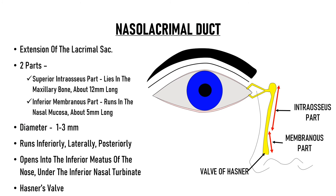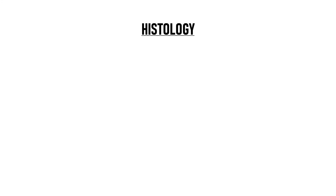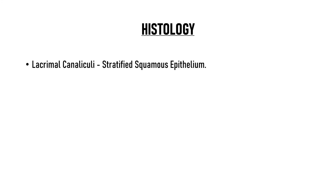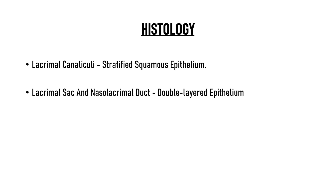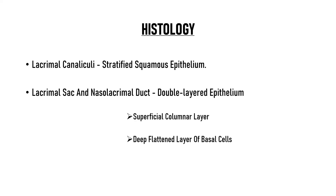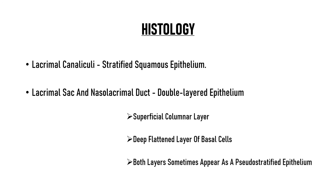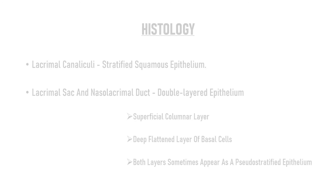A mucosal valve known as Hasner's valve may be present at the opening of the duct into the inferior meatus of the nose. Regarding histology of the lacrimal drainage system: the canaliculi are lined by stratified squamous epithelium. The lacrimal sac and the nasolacrimal duct are lined by a double-layered epithelium composed of a superficial columnar layer and a deep flattened layer of basal cells. Both layers sometimes appear as pseudostratified epithelium.